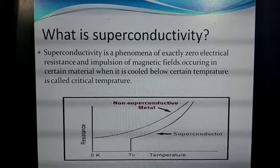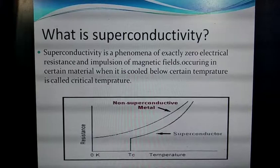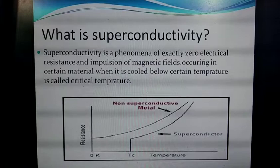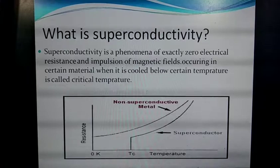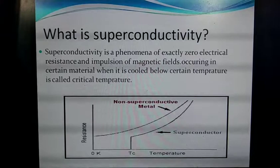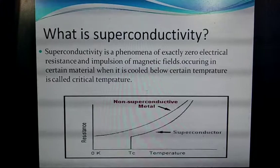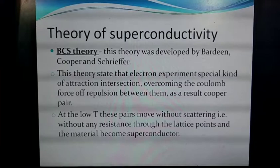Superconductivity is the phenomena of zero electrical resistance when a substance is cooled below the critical temperature. When a material exhibits superconductivity, it expels the magnetic field. As you can see in the graph of temperature versus resistance, in a normal metal, resistance decreases as temperature decreases, reaching zero at zero Kelvin. But in a superconductor, resistance becomes zero at a certain point called Tc.